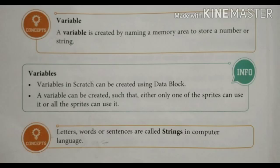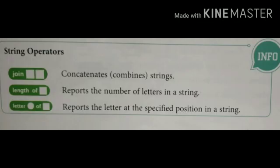Now, here are some string operators. First one is join. And you can see two squares are given. It combines two strings. In first block, if you are going to write something and in the second block also, then it will combine both the things. Second one is length of. It reports the number of letters in a string. Suppose I have written computer. A computer has eight alphabets. So it will report eight.